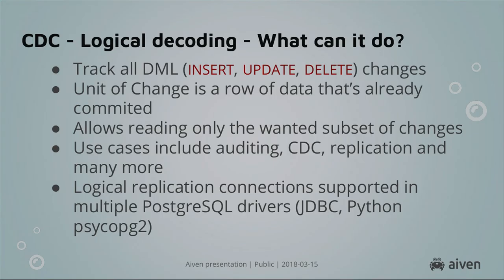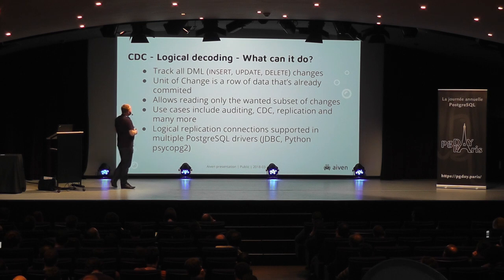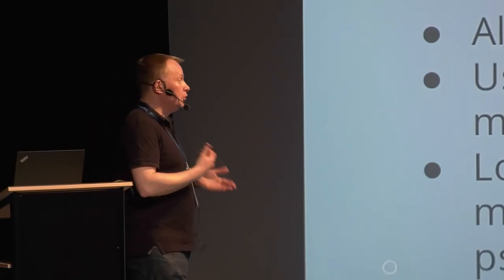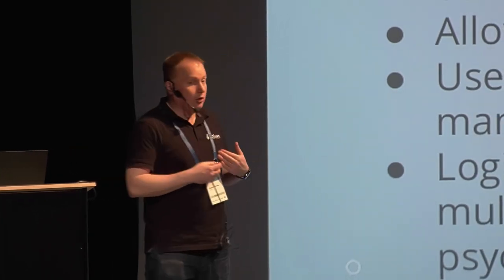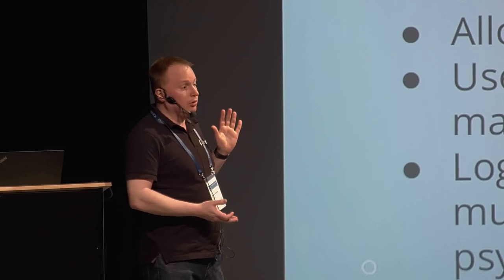Change data capture with logical decoding: in conjunction with replication slots, it allows Postgres to keep track of all the changes happening in a single logical database. It decodes the write-ahead log to the desired output format. There are multiple different plugins that allow you to write change data in pretty much any format — there are ones for Protobuf, ones for JSON, and ones for pretty much anything, and you can write your own. Use cases are really various: replication, auditing purposes, and lots more, because this finally comes with almost zero performance impact.